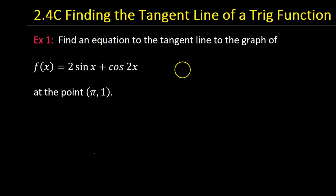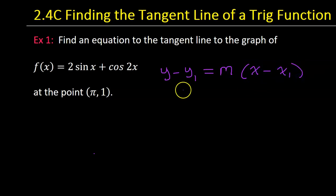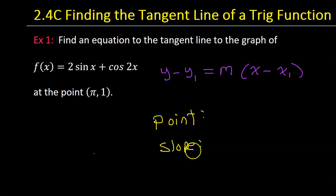If you want to find a linear equation, in calculus the best form to use is called point-slope form. It looks like this: y minus y1 is equal to the slope m times x minus x1. For this form of a linear equation you need two things — a point and the slope.